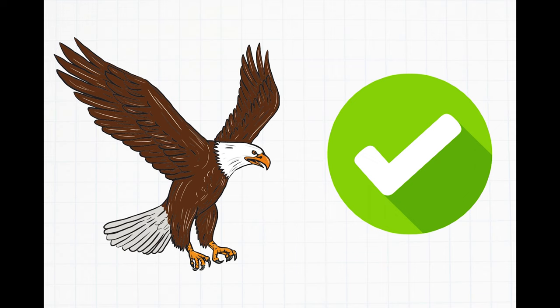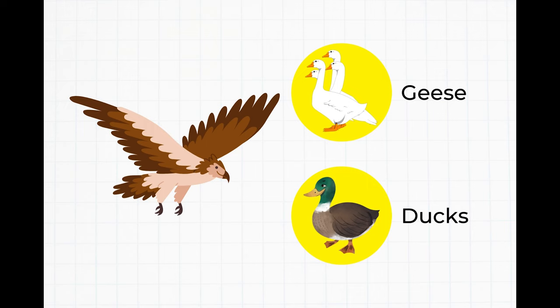Some eagle species target large waterfowl such as geese and ducks, while others pick off small deer or goats, particularly infants or juveniles.